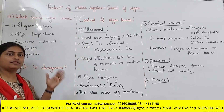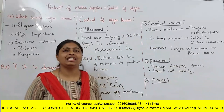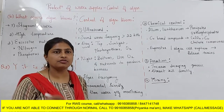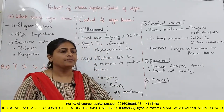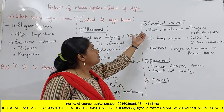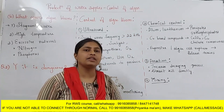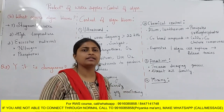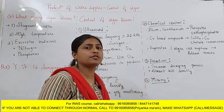The next method is chemical control. Just like when mopping your house you use phenol or lysol to kill bacteria, here also certain chemicals are used for controlling algae. There are different types of algae — cyanobacteria, phytobacteria — and different chemicals are used for different types of algae.